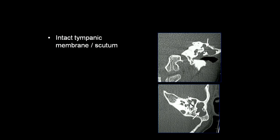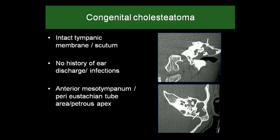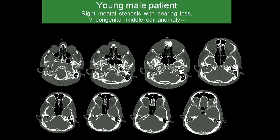Another patient — a child — shows an intact scutum, soft tissue with thinning and expansion of the lateral mastoid wall, and intact tegmen. There is some blunting of the head of malleus. There was no history of ear discharge or infections, but there is ossicular chain erosion. This is where you suggest the possibility of congenital cholesteatoma — in which the scutum is typically intact and there is no history of ear discharge.